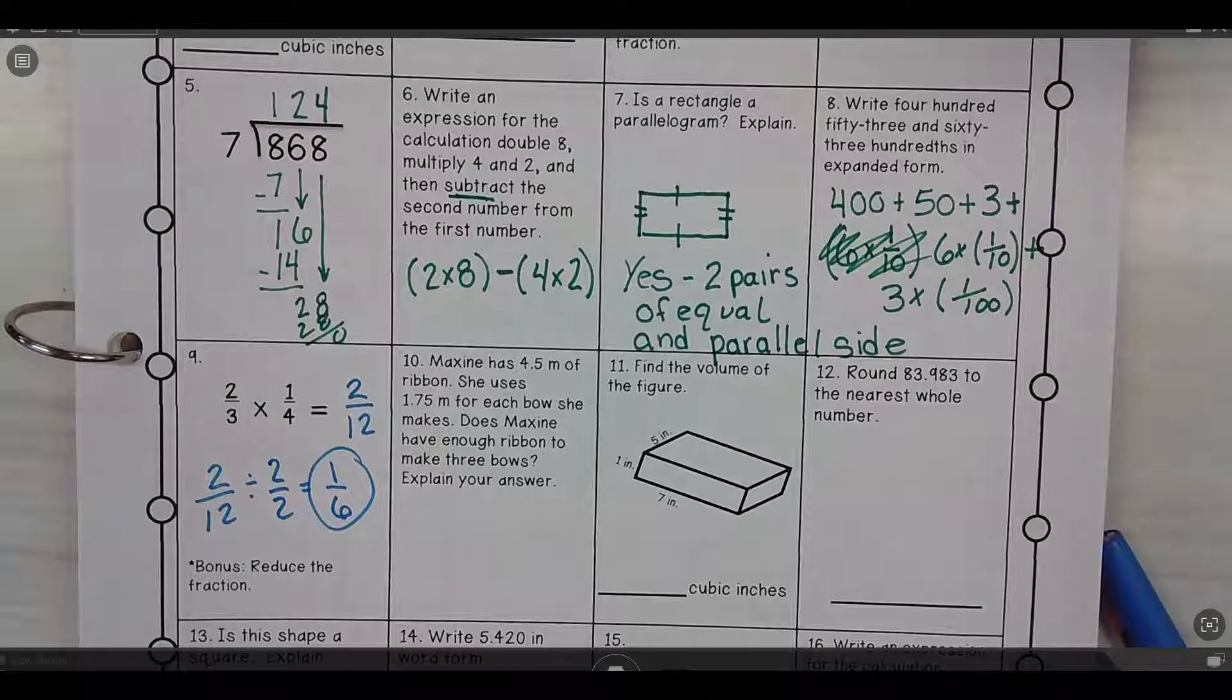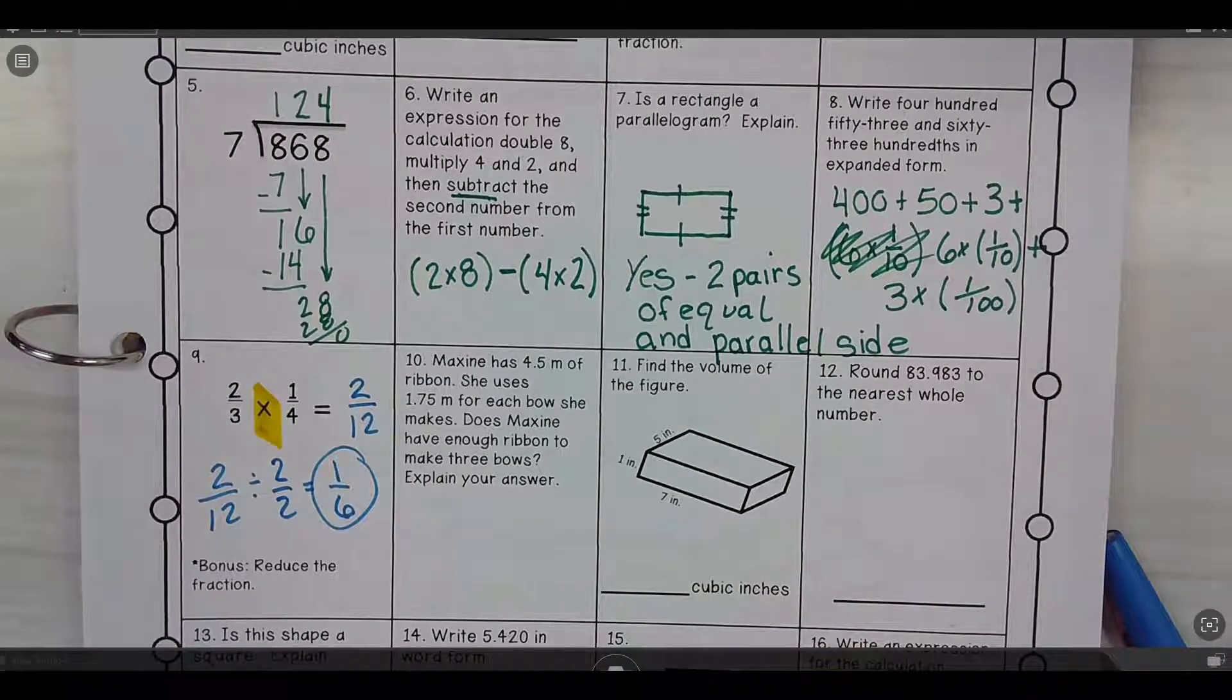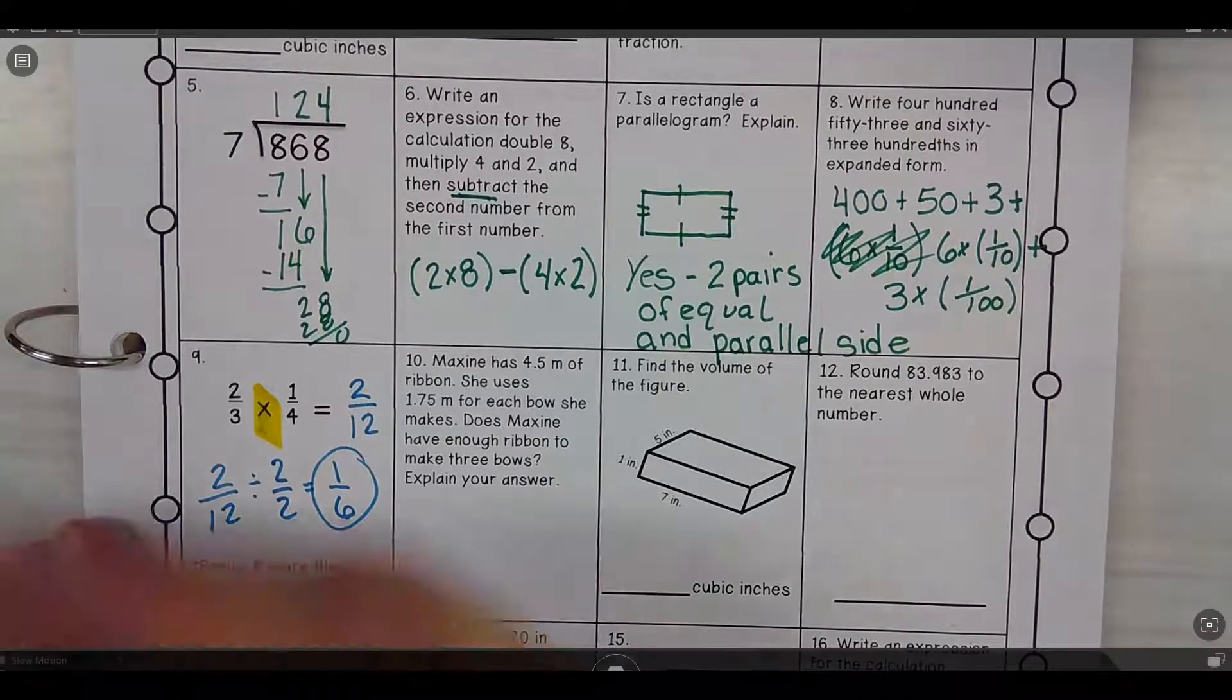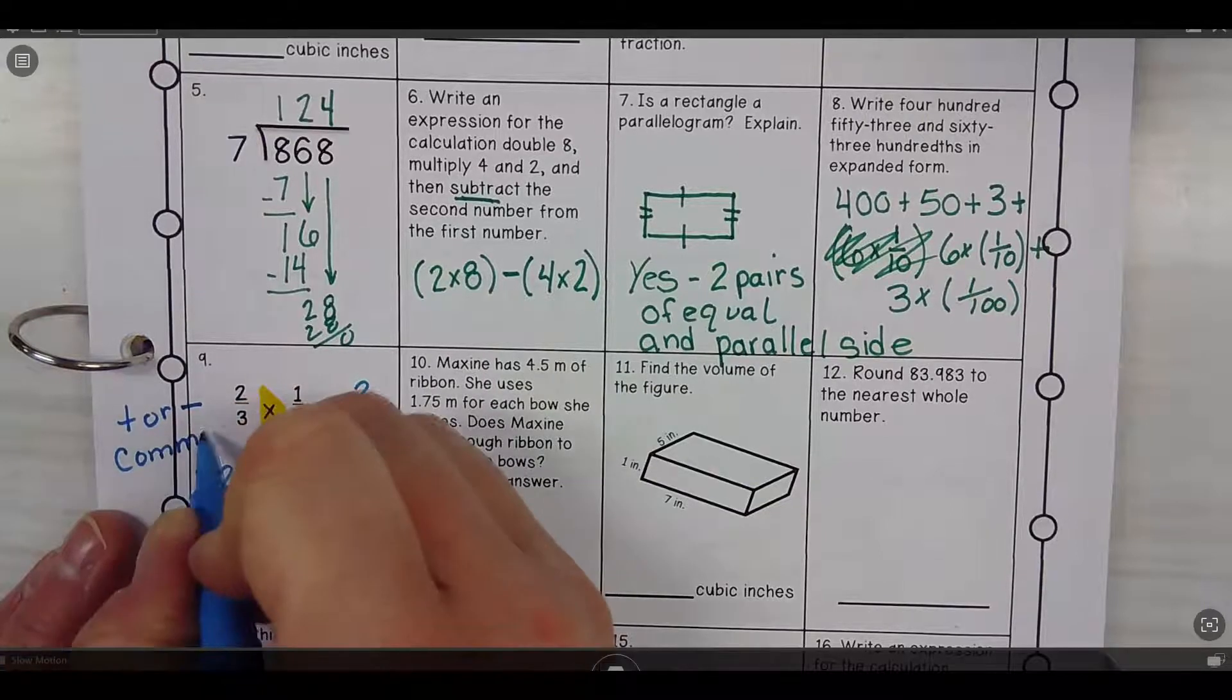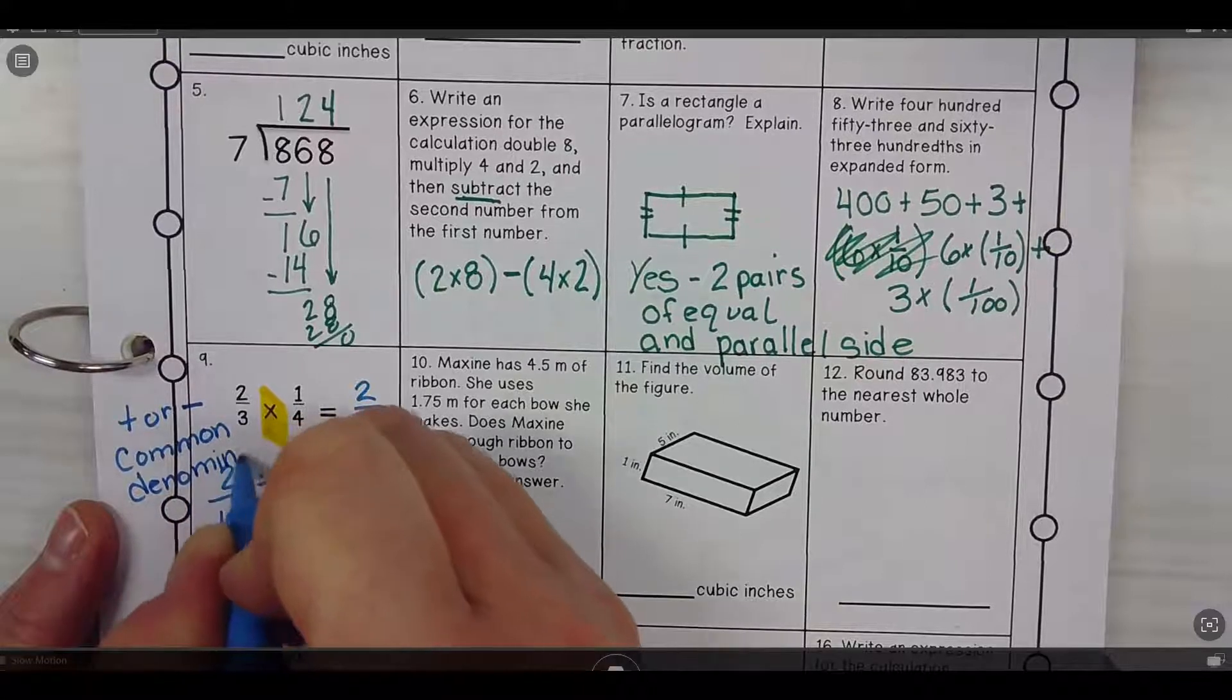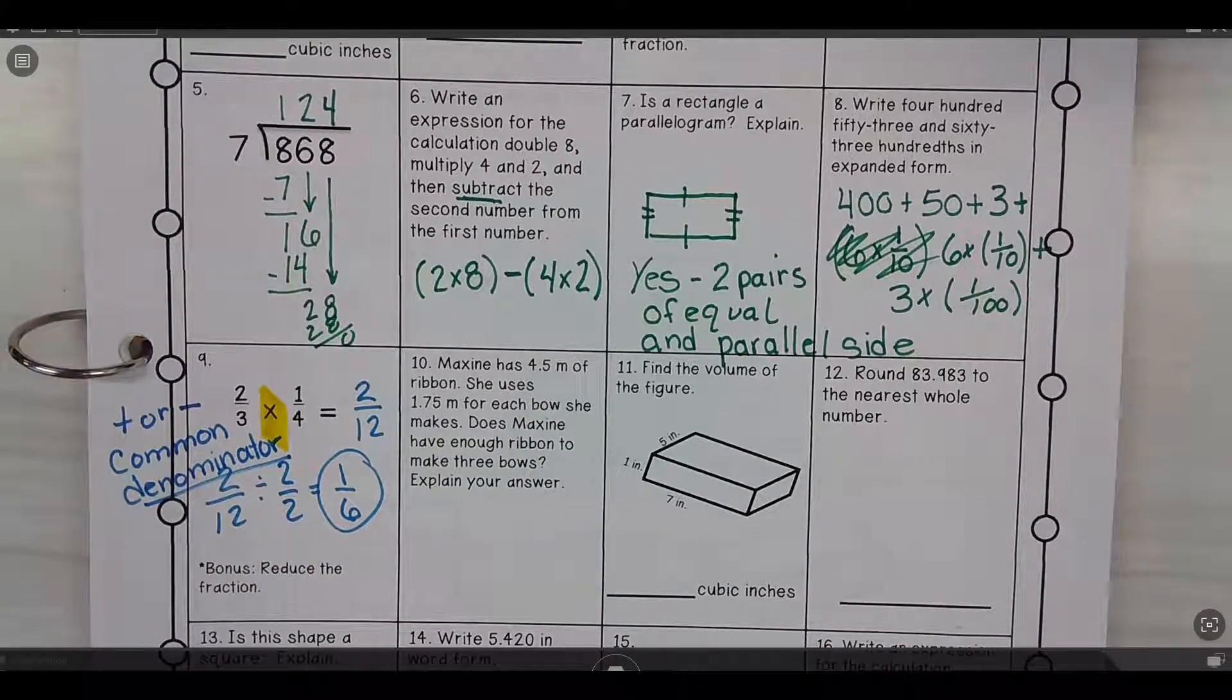Okay, so you can make a common denominator, but you don't need to do with the multiply. When you have multiplication, you don't need a common denominator. When you're doing fractions, your common denominators are when you add or subtract, you need a common denominator. When you're multiplying or dividing, you're not going to need a common denominator. That's a great question.